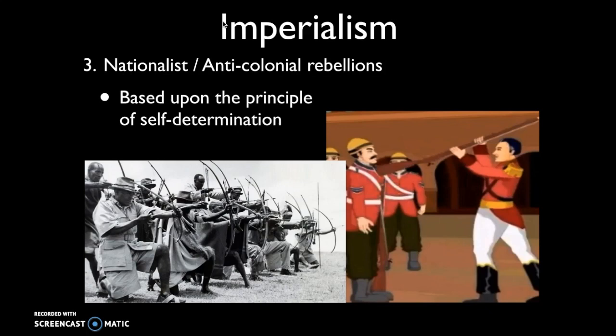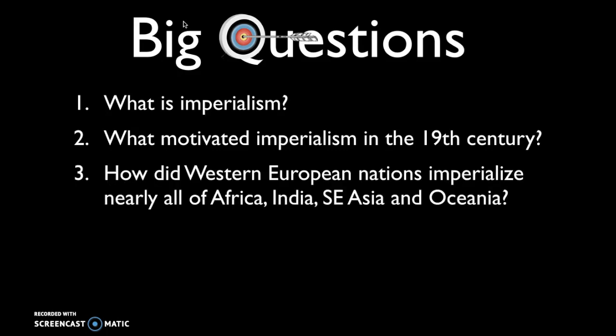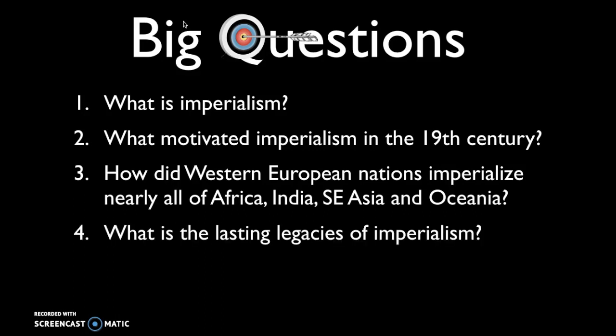We started to see the beginnings of that story in Period 5 with movements like the Sepoy Rebellion of 1857 in India, and we'll see a lot more anti-colonial rebellions in Period 6. So the big questions you should be able to answer after watching these two videos were: what is imperialism? What motivated imperialism in the 19th century? How did Western European nations imperialize nearly all of Africa, India, Southeast Asia, and Oceania? And what were the lasting legacies of imperialism? Thanks for watching.